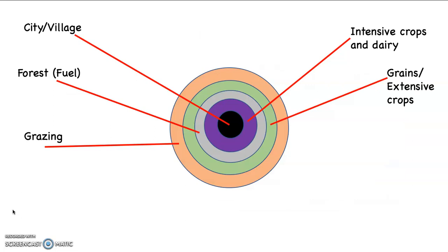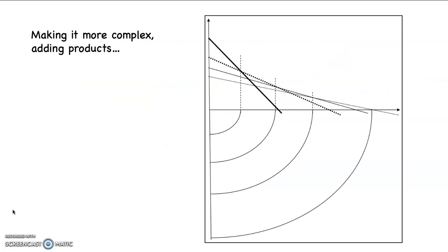So again, this is what's happening with the model. The city's in the middle. The intensive crops and dairy are closest to the city because they can maximize profit. That's followed by the forest products, and then that's followed by grains and extensive crops, and that's followed by grazing. All of these things set up logically in von Thünen's model because that's the way you can maximize profit as a farmer.